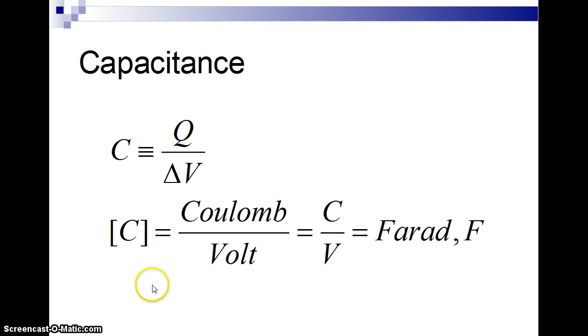So the units of capacitance, when I have these square brackets, it means the units of. The units of capacitance are charge per volt. So coulombs per volt, C over V.